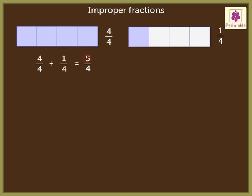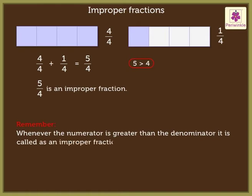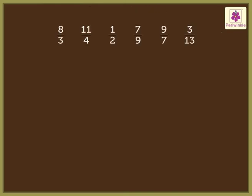Look at the numerator — it is greater than the denominator. So we say that five upon four is an improper fraction. Remember, whenever the numerator is greater than the denominator, it is called an improper fraction.